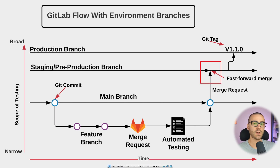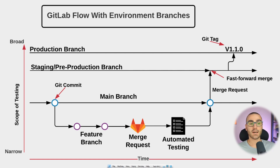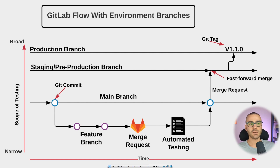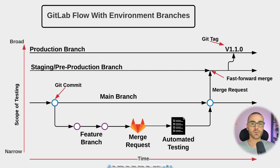Notice the merge point between the main branch and the staging/pre-production branch. In the merge between the feature branch and the main branch, there is a git commit represented — merging may or may not cause a merge commit to be created. But from the main branch to the staging/pre-production branch, that should be a fast-forward merge, meaning there shouldn't have been any commits made on the staging/pre-production branch that need to be merged. Likewise, when we merge the staging/pre-production branch into the production branch, that would also be a fast-forward merge.